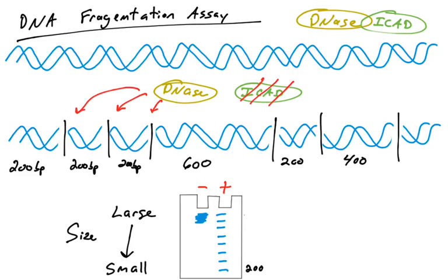You end up seeing what is known as a ladder of DNA, and this characteristic fragmentation is an indicator that apoptosis is occurring. This is another very common, very easy mechanism to measure whether or not apoptosis is occurring. DNA fragmentation is the result of executioner caspases cleaving ICAD. That's one quick and easy DNA fragmentation assay.